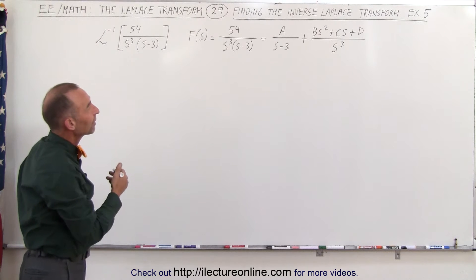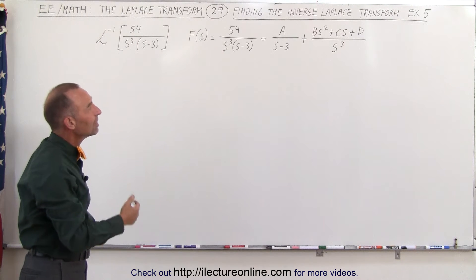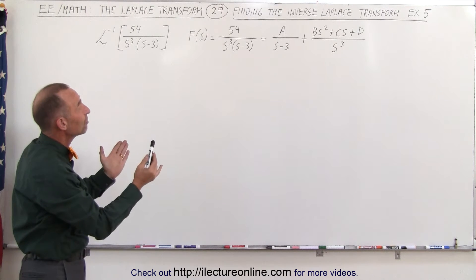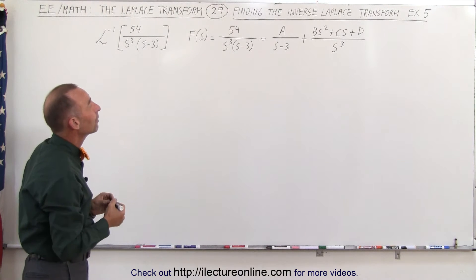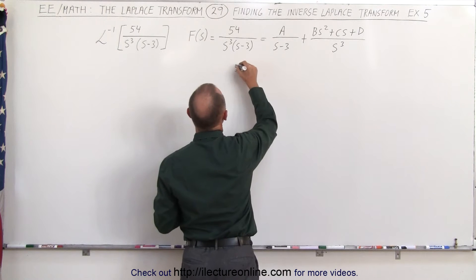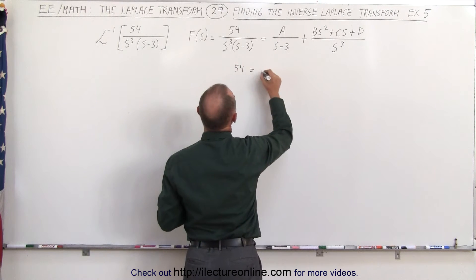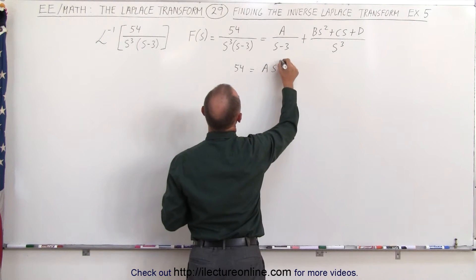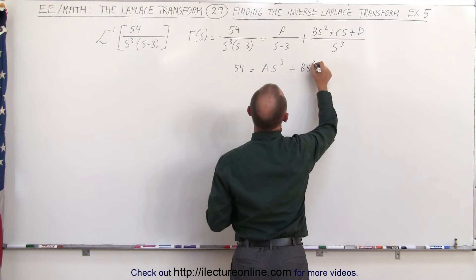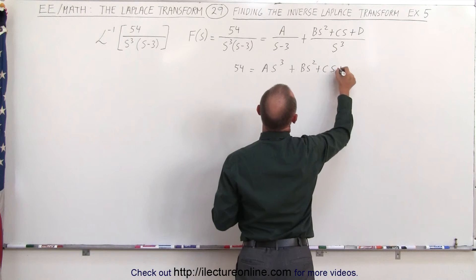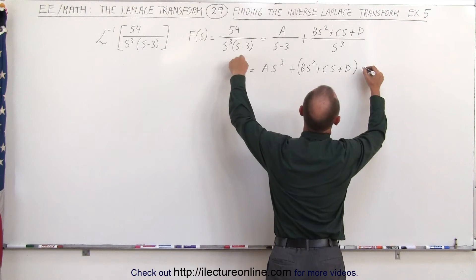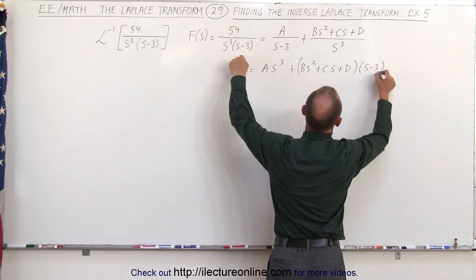So now we need to find the values of a, b, c, and d. We can do that by multiplying both sides of the equation by the common denominator s cubed times s minus 3, which means this would then simplify to: 54 is equal to a s cubed plus b s squared plus c s plus d, multiplied by s minus 3.